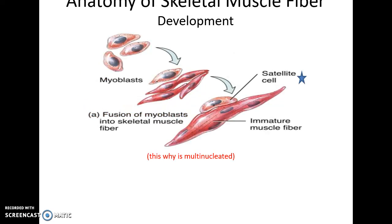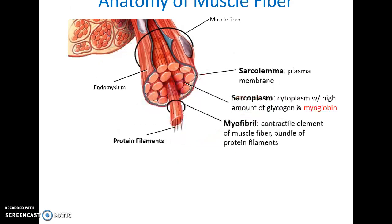When skeletal muscle fibers start off, they begin as stem cells called myoblasts. Over time these myoblasts fuse and form very long skeletal muscle cells. This is why skeletal muscle cells are multinucleated — the nuclei come from all those myoblasts that fused together. Looking at the muscle fiber, the plasma membrane has been renamed — it is now called the sarcolemma, and the cytoplasm is now called the sarcoplasm.